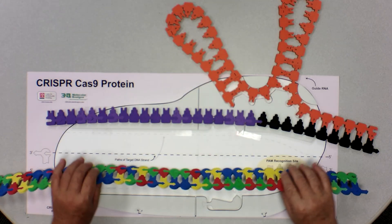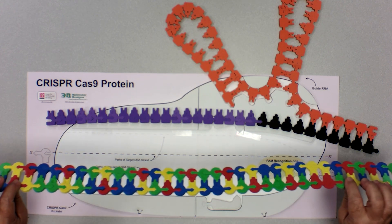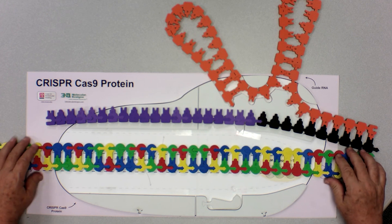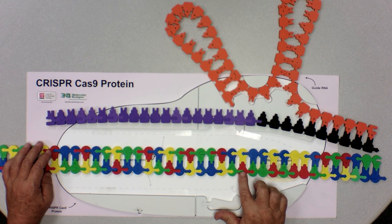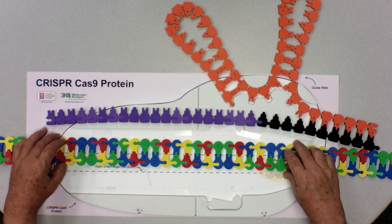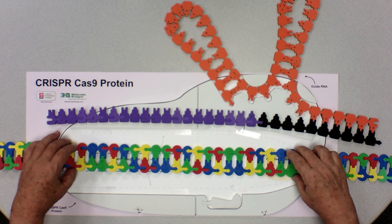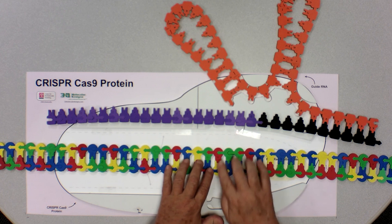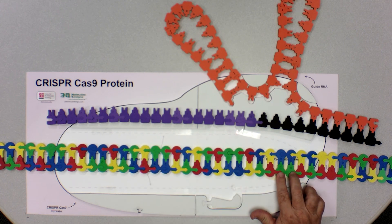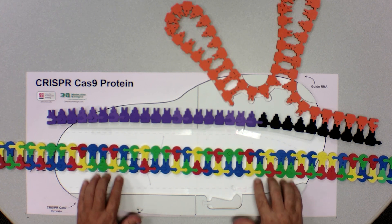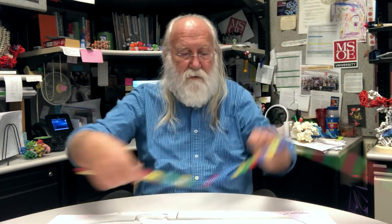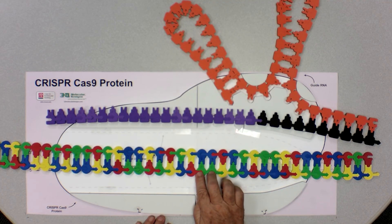For Cas9, the PAM site is NGG — meaning any nucleotide followed by GG. So when looking at a sequence, you're looking for two consecutive G's with any base in front of them. When you find that — here's a PAM site, here's an NGG — we're going to place that right over the PAM recognition domain. There's also a PAM site in the bottom strand. The point is the Cas9 protein will bind sort of randomly at each one of these PAM sites.